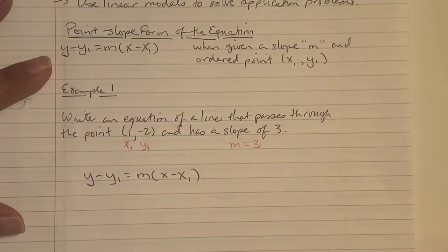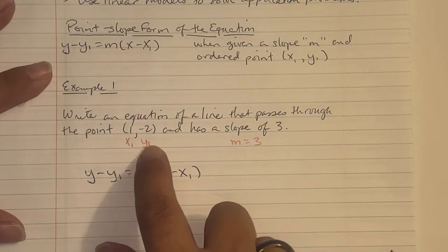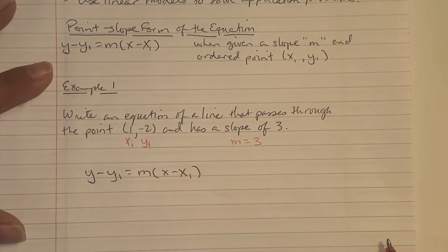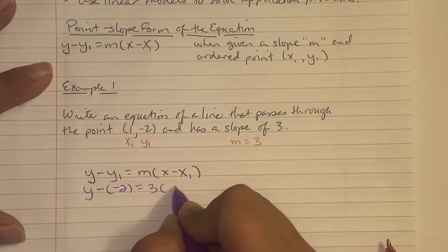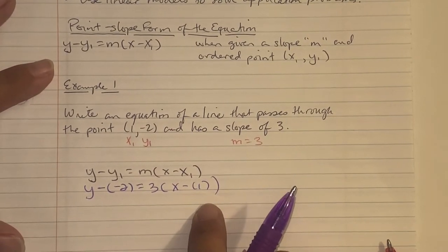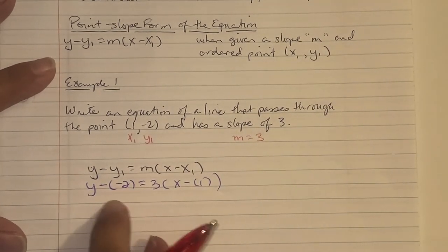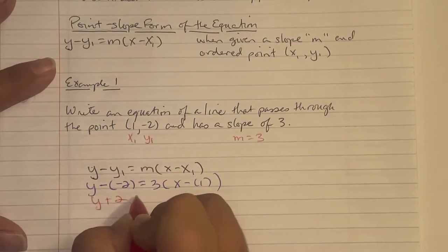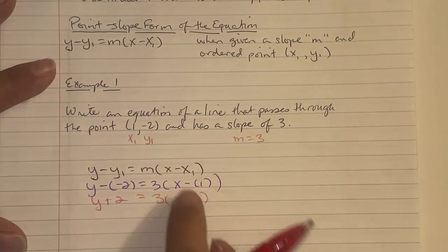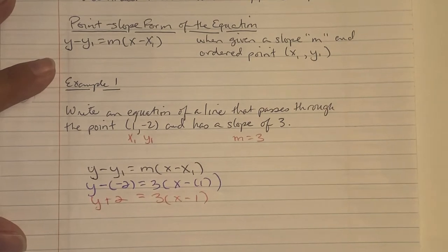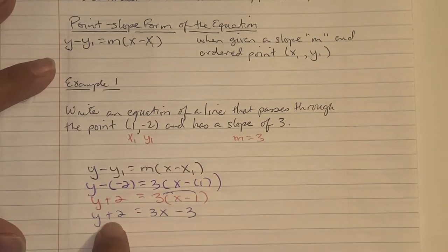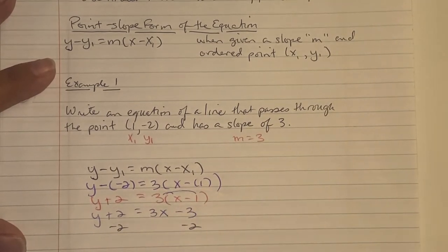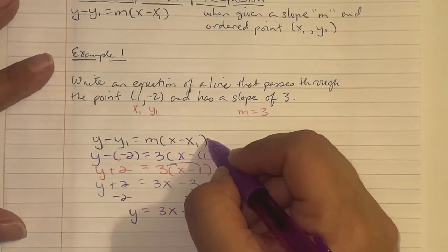We write the point-slope formula and use substitution: y minus (-2) equals 3 times (x minus 1). Because of the minus-minus situation, this becomes y plus 2 equals 3(x minus 1). Using distributive property: y plus 2 equals 3x minus 3. Subtracting 2 gives us slope-intercept form: y equals 3x minus 5. Point-slope leads us to slope-intercept form, which allows us to graph.